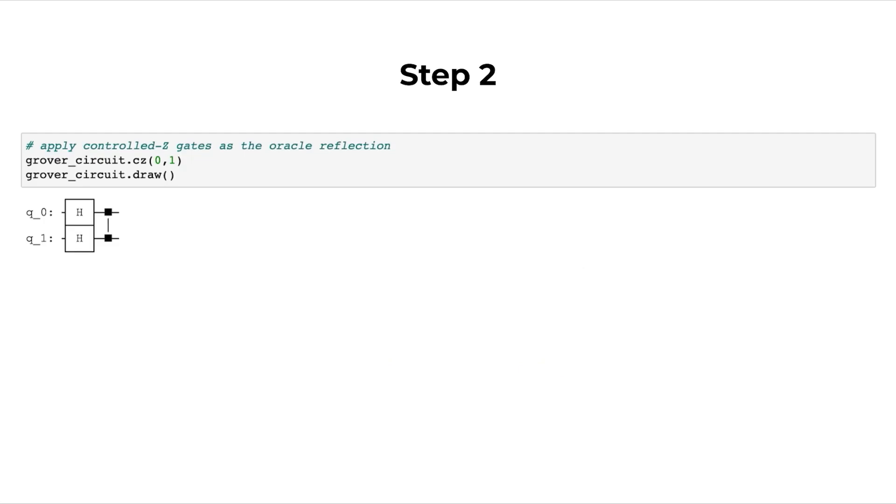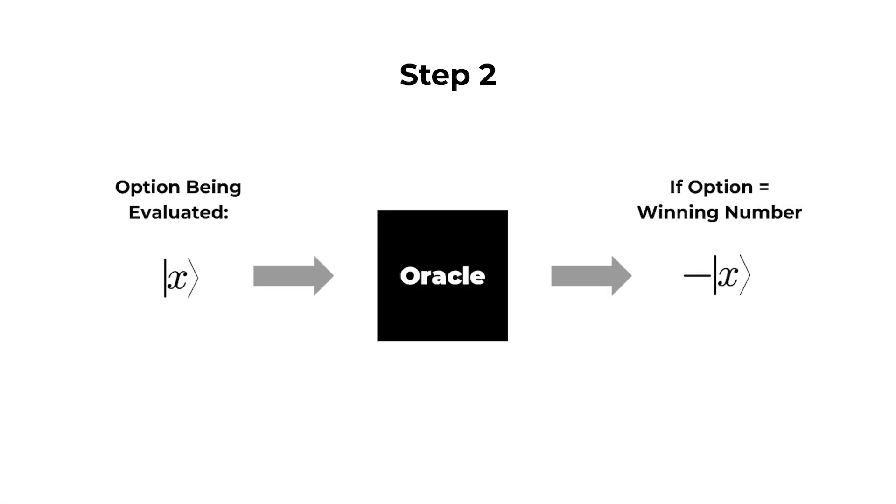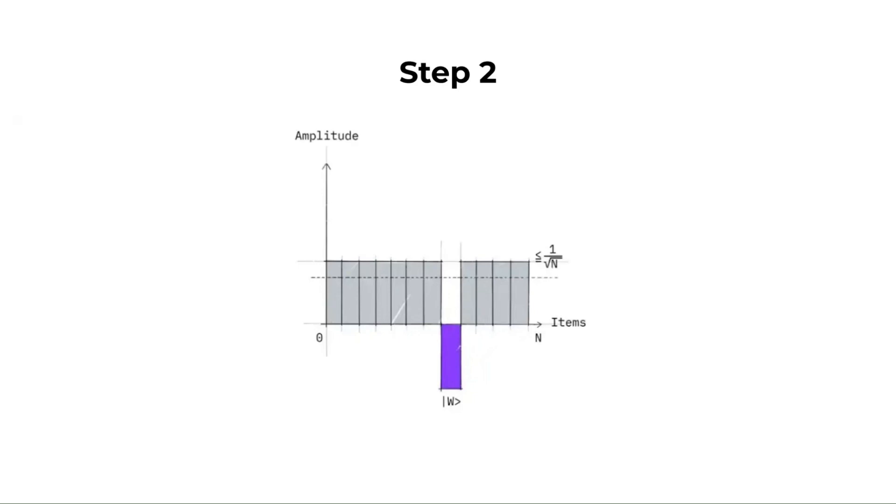Now, in the classical approach, remember how we told the oracle what the winning value was so we knew what to look for? Well, we've got to do that here too, by applying a controlled Z gate which also acts as the oracle reflection and transforms the winning state into its negative value. Basically, the oracle or that black box we refer to will flip the sign of the winning state so that it's differentiated from the rest. It's essentially a way to just mark the winning state. After the negative phase is applied, the graph looks like this. The winning value highlighted in purple now has a negative amplitude and the average amplitude has also been lowered as a result of this transformation. It's indicated through the dashed line.